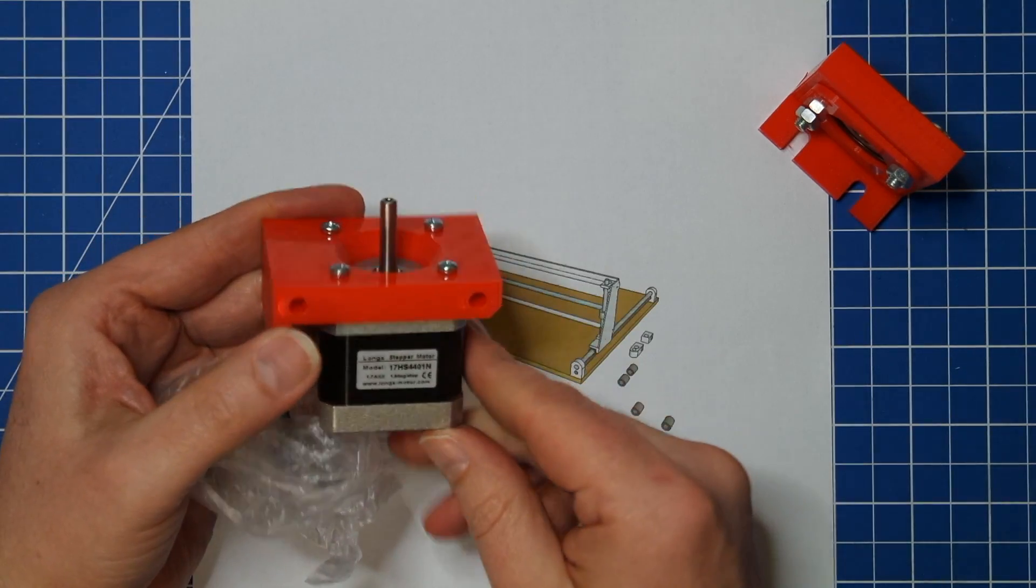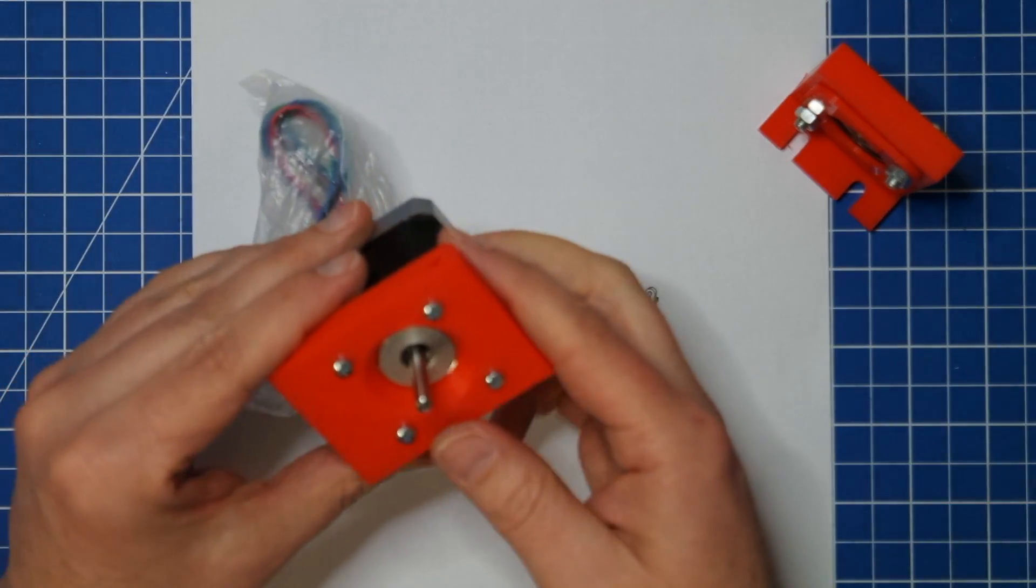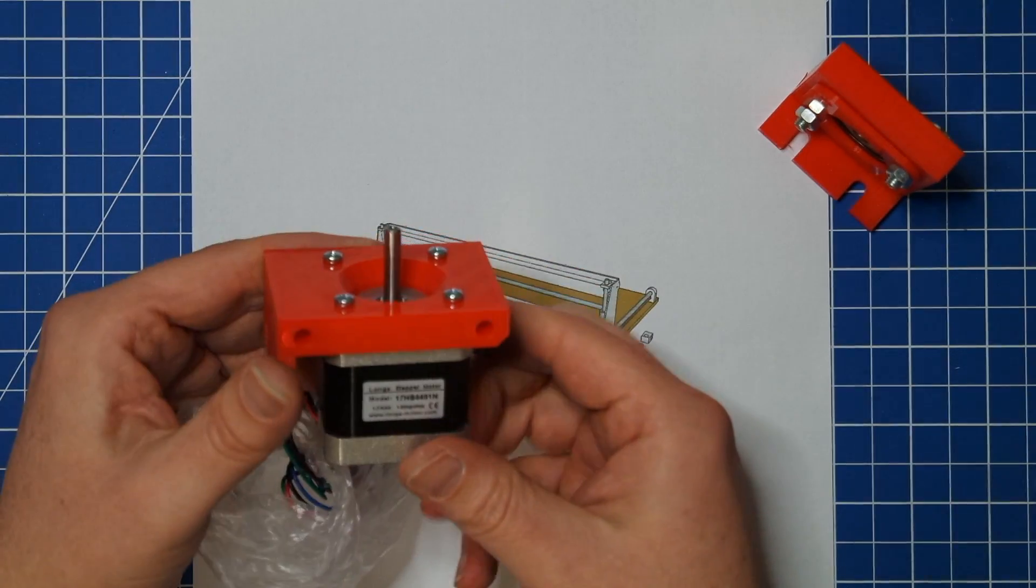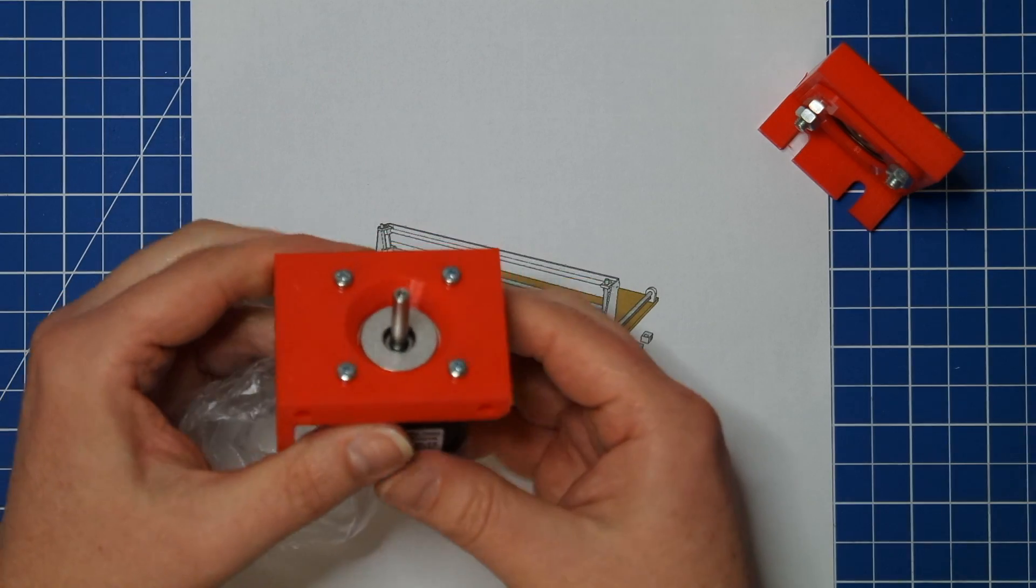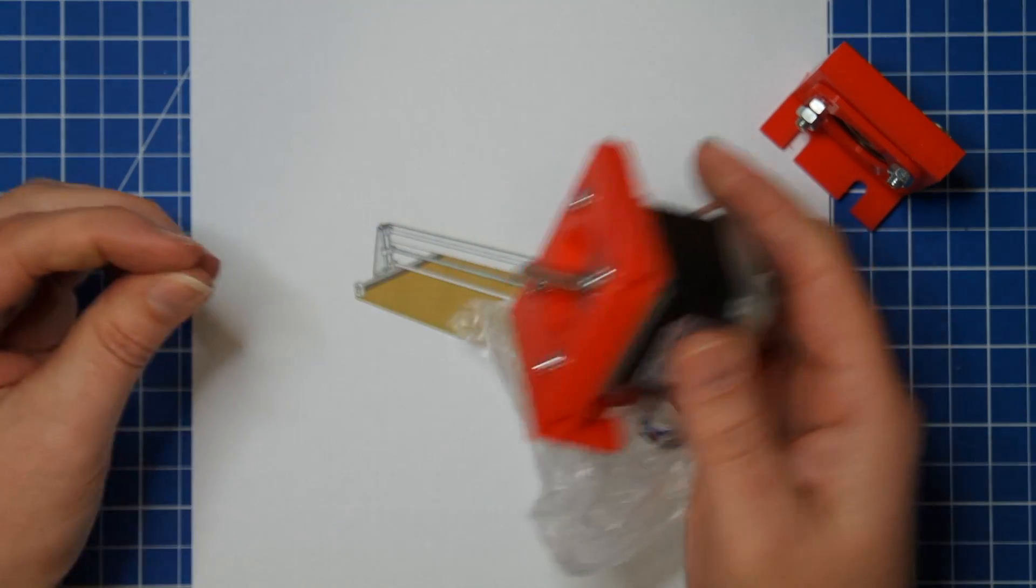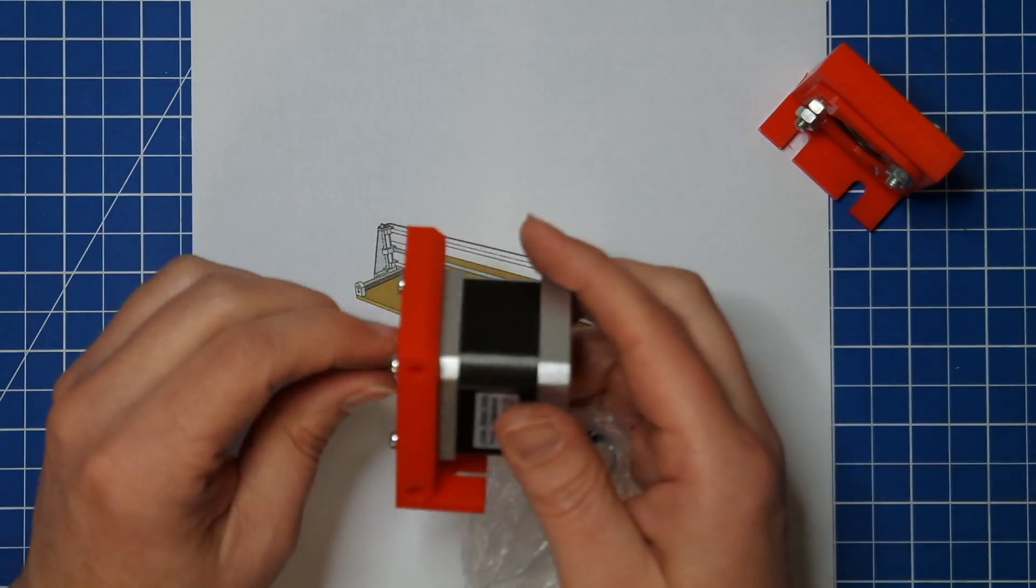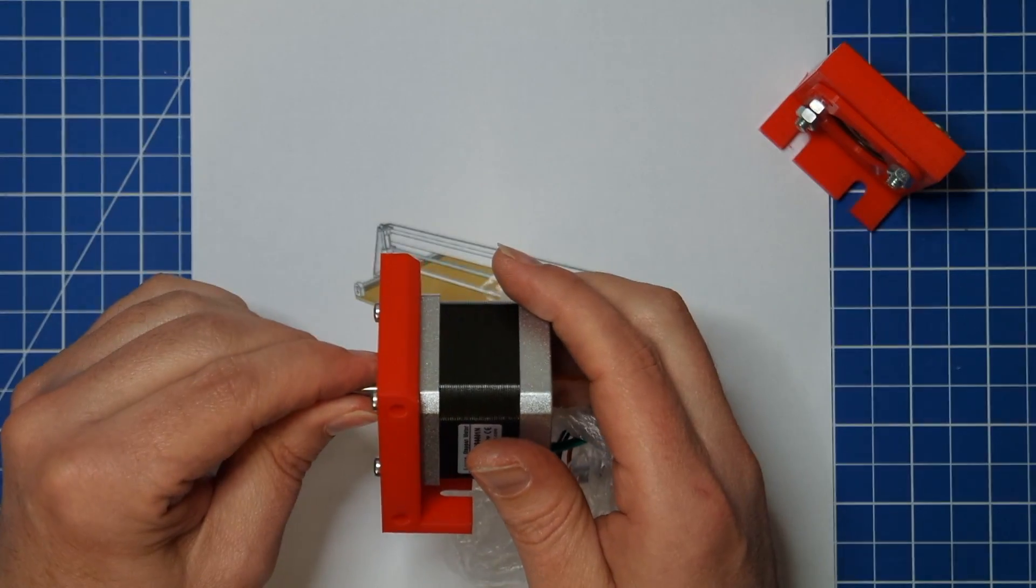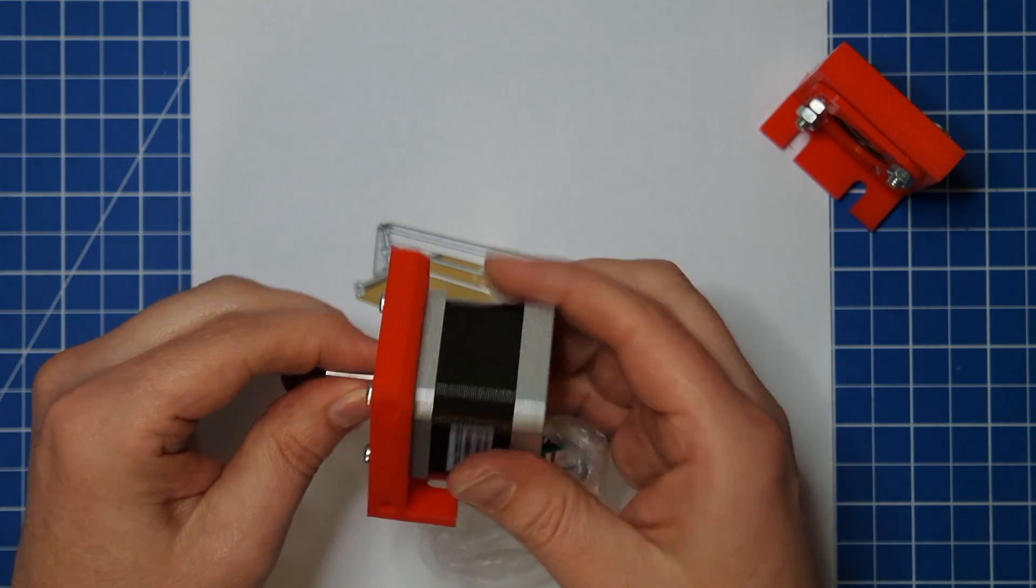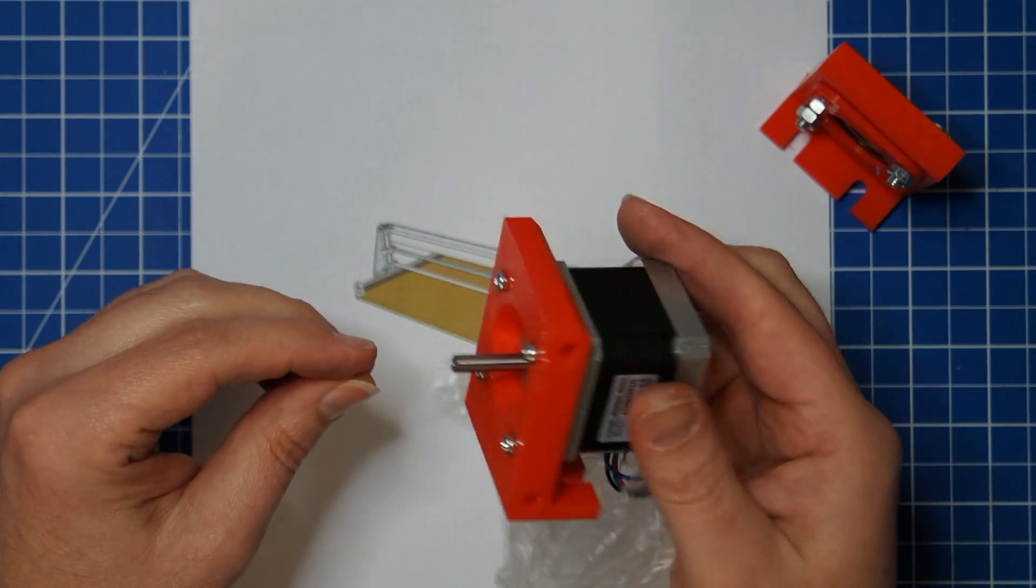Each of these steppers has a holding torque of 40 Newton centimeters, which translates when you use the threaded rod to about 5 kilograms of holding force. So you could actually make it pull up to 5 kilograms or have it push the equal force.